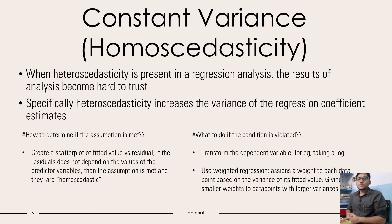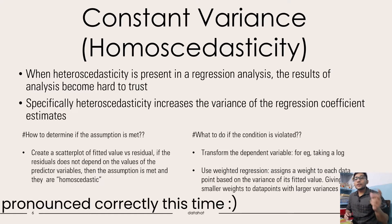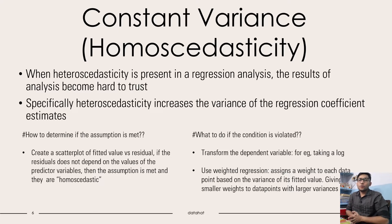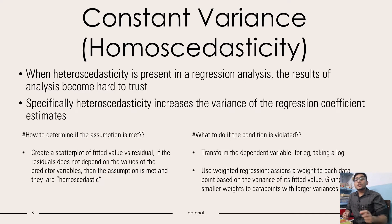Coming to the next assumption of constant variance, also known as homoscedasticity. The related term is heteroscedasticity, when the variance is non-constant — when the variance has a certain relationship with the data points. When heteroscedasticity is present or homoscedasticity assumption has failed, the results of the analysis become hard to trust and the reliability of the overall model goes down. Specifically, heteroscedasticity increases the variance of the regression coefficient estimates.